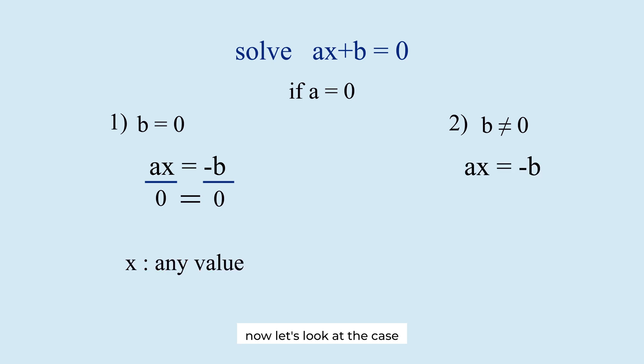Now, let's look at the case where b is non-zero. The left side is 0 and the right side is not 0. It implies that 0 equals a non-zero number. This equation can't be valid. It is impossible. There is no solution that satisfies this equation.